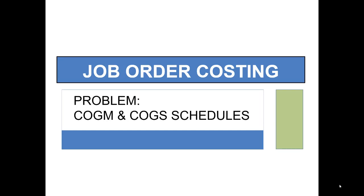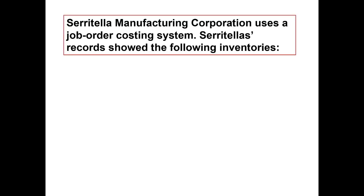In this problem, we'll take a look at Cost of Goods Manufactured and Cost of Goods Sold Schedules. These are prepared before the income statement is prepared for a manufacturer. Saratela Manufacturing Corporation uses a job order costing system.